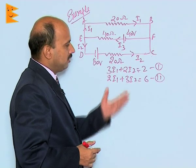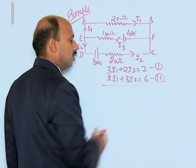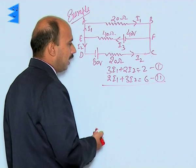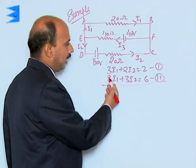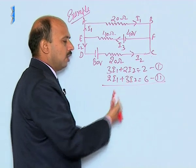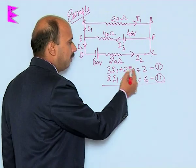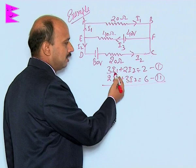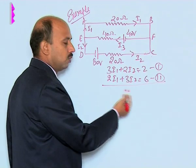Now we can solve these two equations here. We will multiply - we have to calculate I1. First we can cancel out I2. This one we have to make equal. We multiply: this is the first equation by 3, second equation by 2.